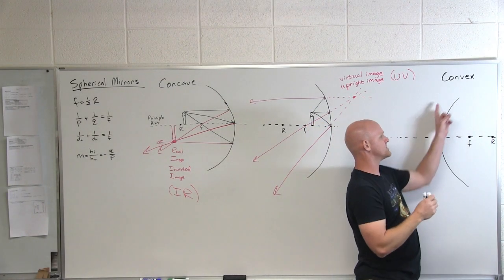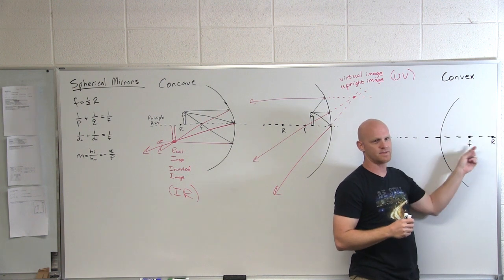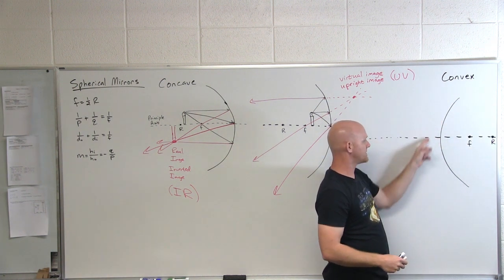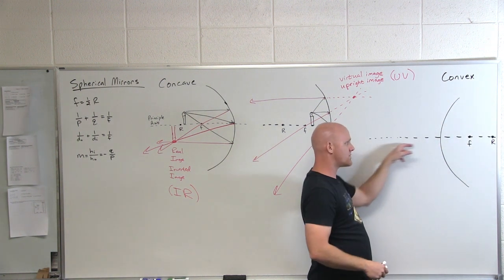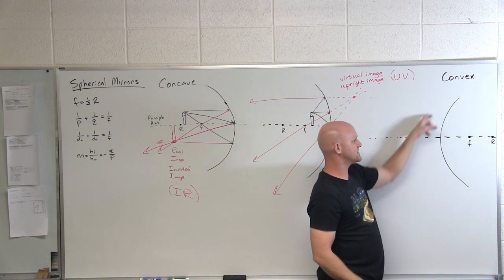So with your convex mirror, your radius of curvature is actually behind the mirror, behind the surface where we'll be looking. If we look at the surface from the left to the right, it's going to be the convex surface.